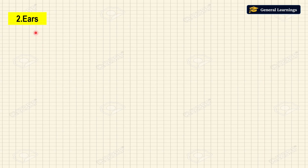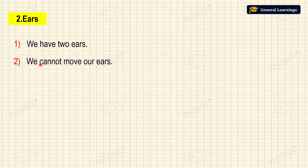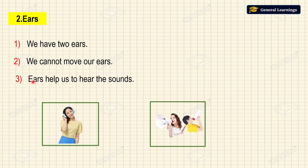Next we are going to see about ears. We have two ears. We cannot move our ear. Ears help us to hear the sounds. Using our ear only we are listening to the sound.